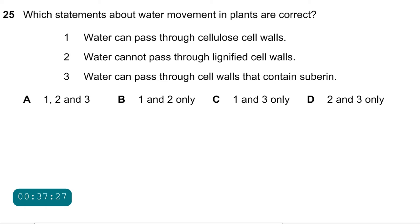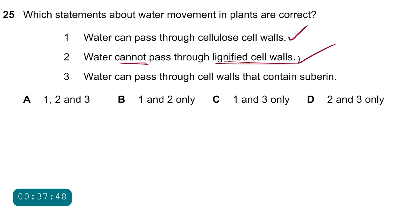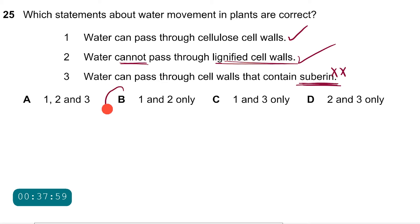Question 25: which statements about water movement in plants are correct? Statement 1 — water can pass through cellulose cell walls — correct because cellulose is fairly permeable. Statement 2 — water cannot pass through lignified cell walls — correct because lignin is impermeable to water. Statement 3 — water can pass through cell walls containing suberin — incorrect because suberin is also a waterproof material. The only correct answer is B.